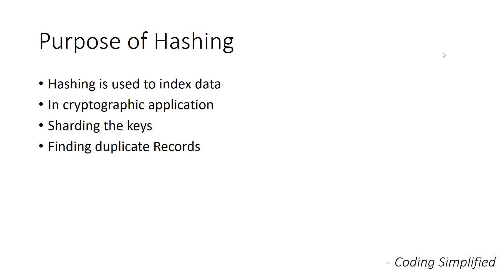Third is sharding the keys. Sharding the keys is very important nowadays when we have distributed systems, because sites like Facebook and Amazon don't rely on one server. They have distributed servers across regions — for Asia, for Europe, for the US, they have different servers. So whenever we need to shard — meaning distribute the keys — we can use hashing.